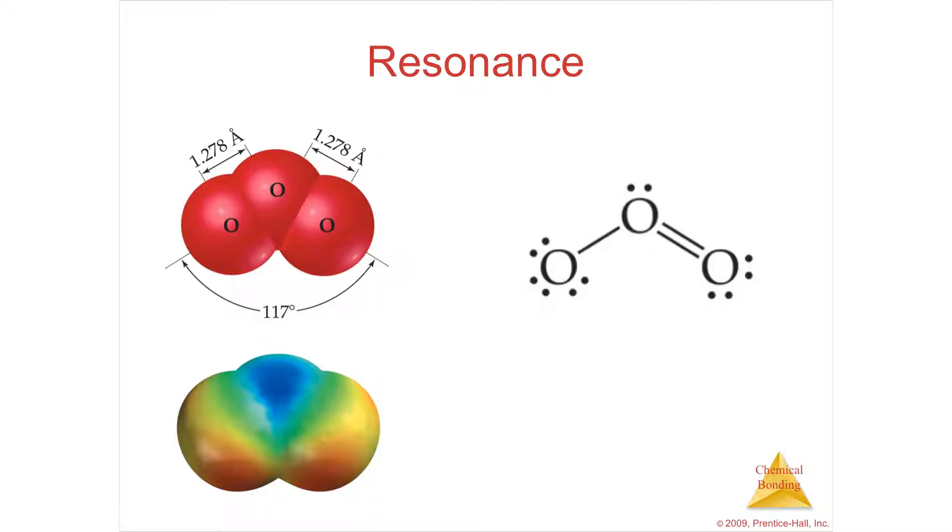Resonance comes from the verb resound, like a bell with a vibration where it pinches in one direction, goes back, then pinches in the other direction. Resonance structure has this idea that there is more than one structure that it tends to go back and forth between.